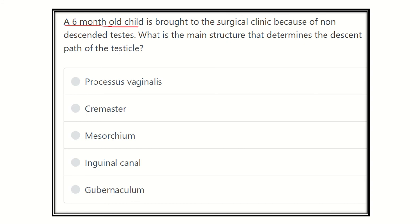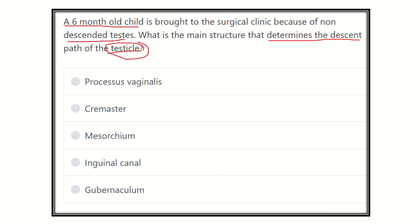A six-month-old child is brought to the surgical clinic because of non-descendant testis, and the question asks what is the main structure that determines the descent path of the testis. The options are: processus vaginalis, cremasteric muscle, external oblique major, inguinal canal, and gubernaculum. We have to find out which structure is responsible for descent of the testis into the scrotum.